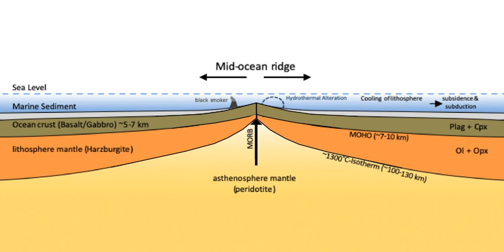As crystallized basalt extruded at a ridge axis cools below the Curie points of appropriate iron-titanium oxides, magnetic field directions parallel to the Earth's magnetic field are recorded in those oxides. The orientations of the field in the oceanic crust preserve a record of the Earth's magnetic field through time. Because the field has reversed directions at irregular intervals throughout its history, the pattern of geomagnetic reversals in the ocean crust can be used as an indicator of age. Likewise, the pattern of reversals together with age measurements of the crust is used to help establish the history of the Earth's magnetic field.